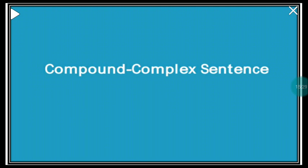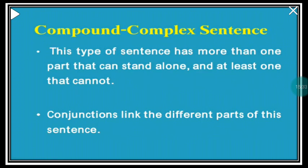Now we come to the fourth type: the compound complex sentence. It is a complex and a compound sentence together — there are two independent clauses and one dependent or subordinate clause. A compound complex sentence has more than one part that can stand alone and at least one part that cannot. Conjunctions link the different parts. Let's look at an example.